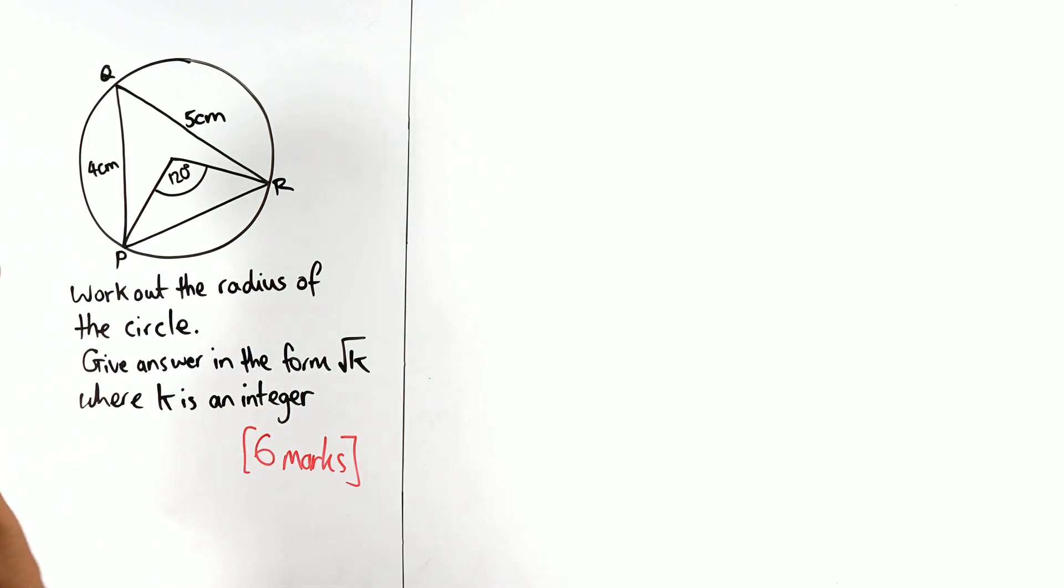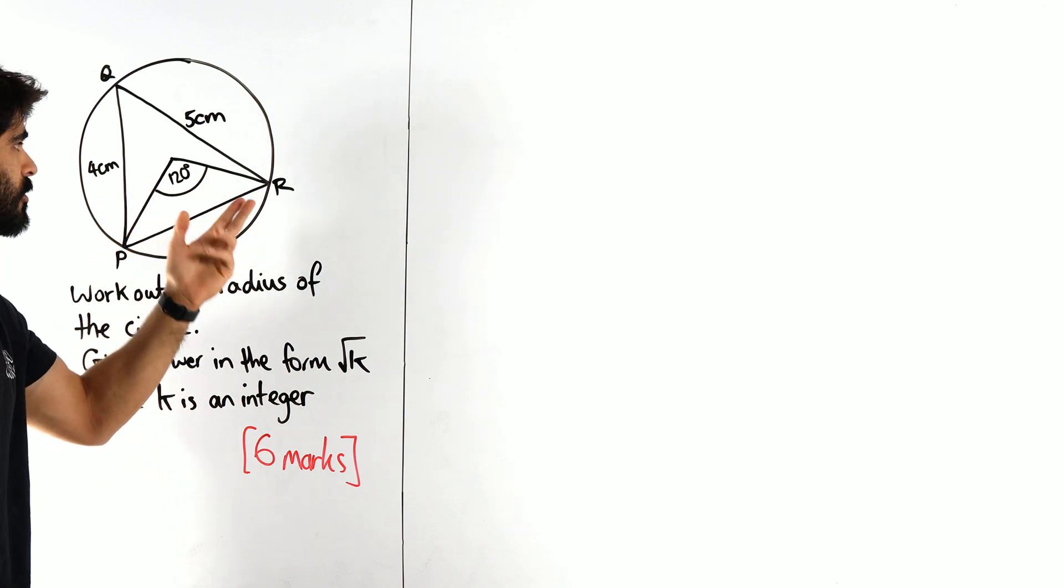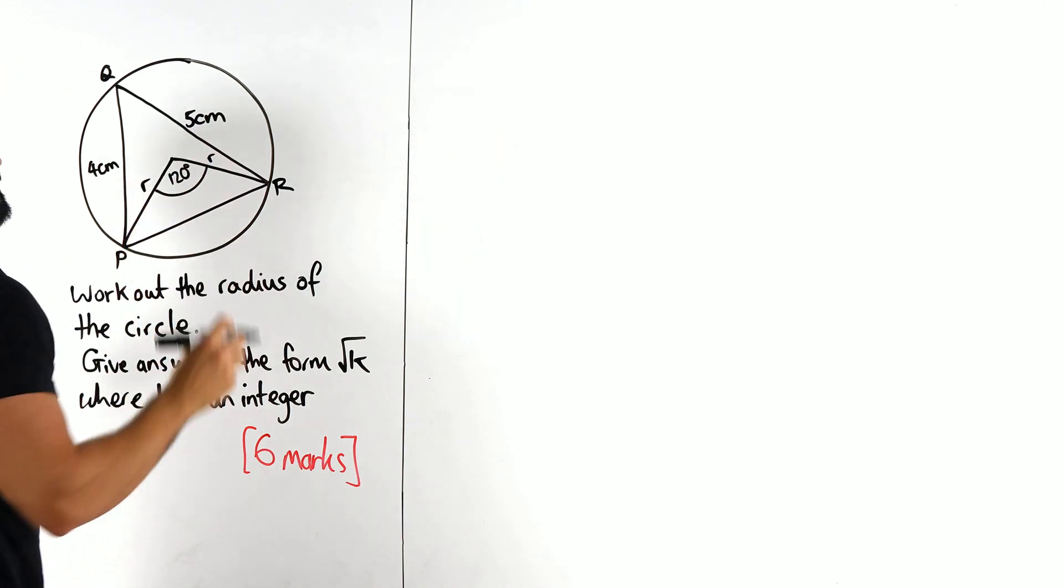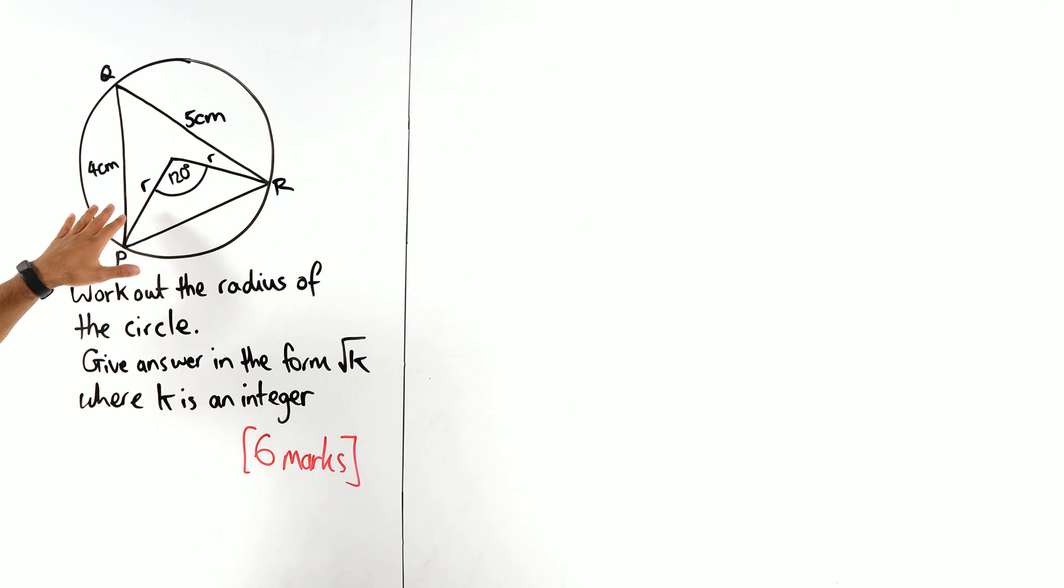So what I'll do here is label which lengths are the radius. We have the radius here and here. We want to figure out how this radius relates to these lengths. I'm thinking about this wider triangle. If I use these two lengths and this angle, I could use the cosine rule to find this length and maybe it will connect.